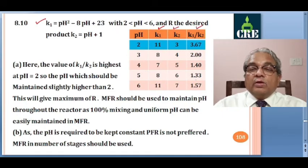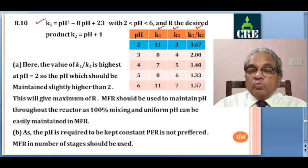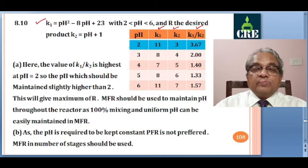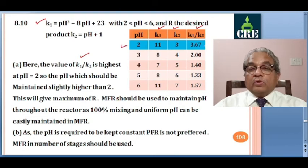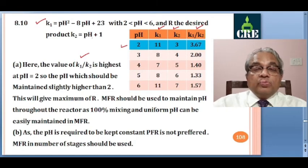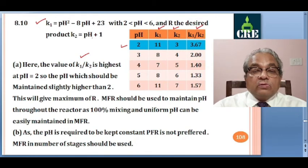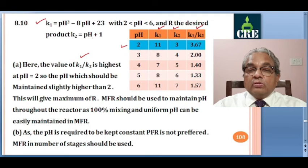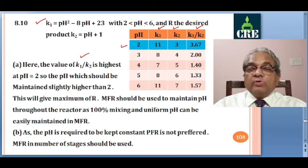R is the desired product, so K1 should be comparatively higher than K2. We want K1 by K2 to be as high as possible. K1 by K2 is highest at pH equal to 2, giving a value of 3.67. So the pH to be maintained is around 2, slightly above 2. We do not go below 2 since the range given is 2 to 6 only, so not below 2 but slightly above 2. This will give maximum R.